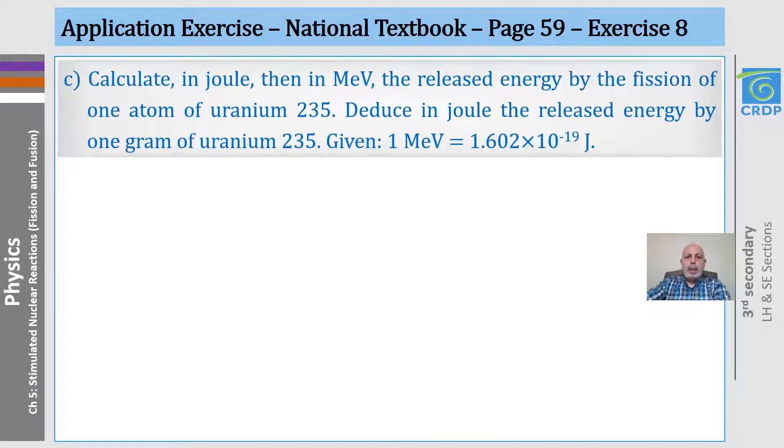Now, part C: calculate in joule, then in mega electron volt, the released energy by the fission of one atom of uranium, then deduce in joule the released energy by one gram of uranium, given one mega electron volt is this.